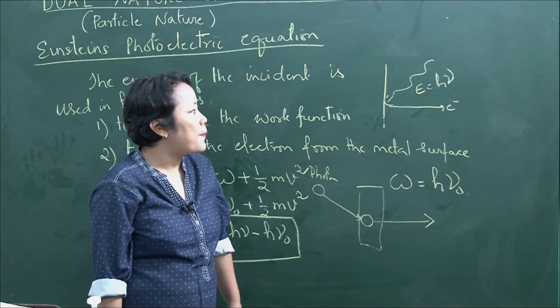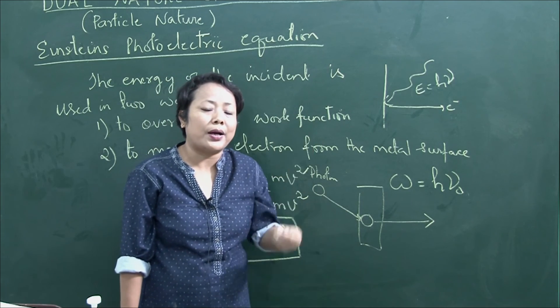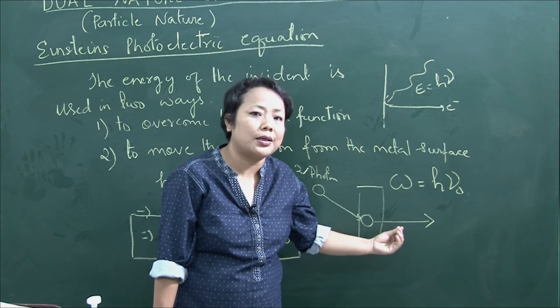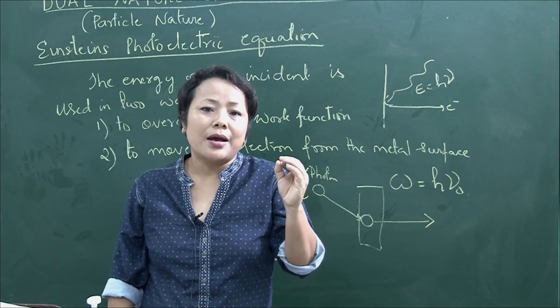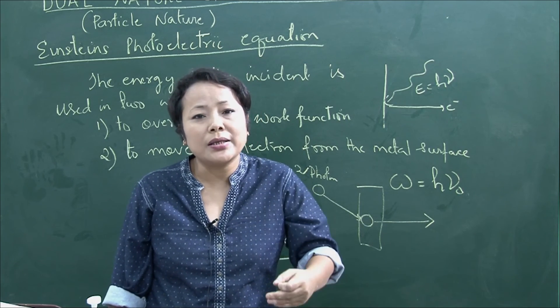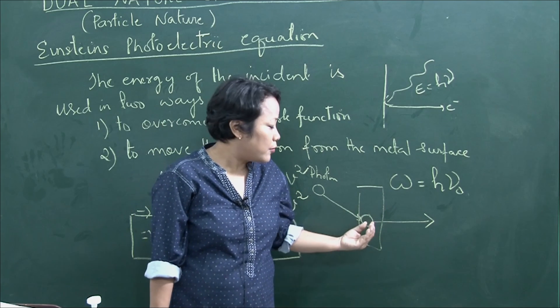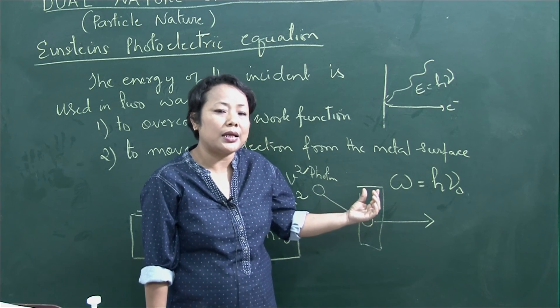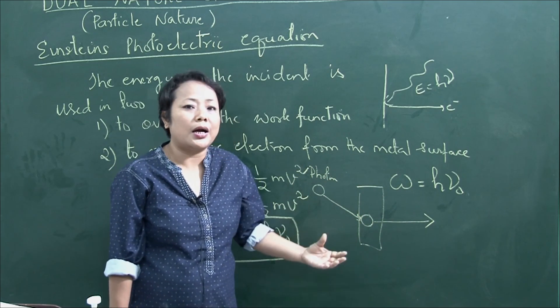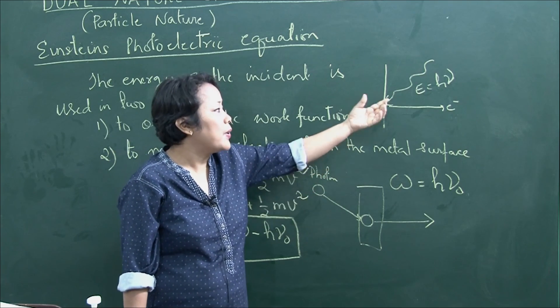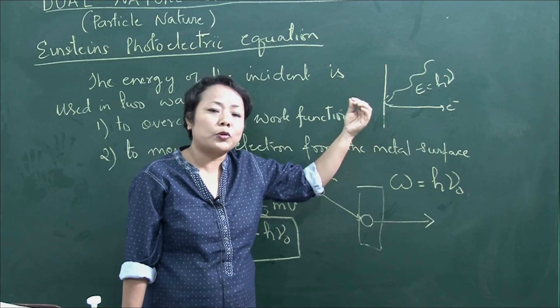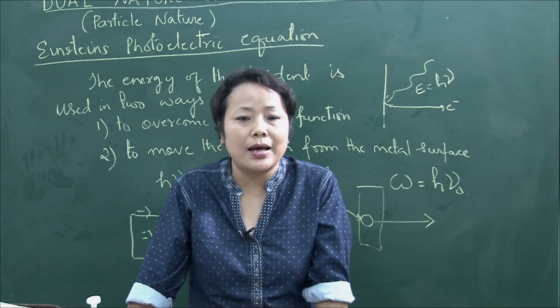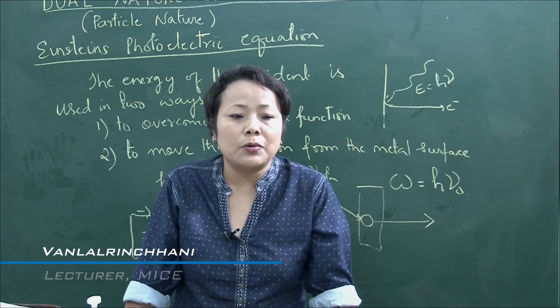This covers the particle nature - photons as particles of light, electrons as particles, and radiation. Matter and radiation exhibit both particle nature and wave nature. The photoelectric effect demonstrates the particle behavior of light. Please refer to the textbook for more details.